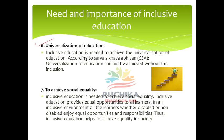Inclusive education is needed to achieve the universalization of education (UEE). According to SSA, inclusive education is very important because universalization of education cannot be achieved without inclusion. If we exclude disabled learners, we cannot achieve universalization at the elementary level, as our goal of universal elementary education will remain incomplete.